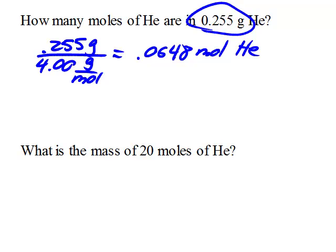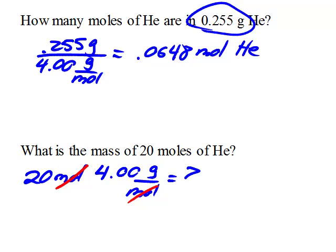Our third question is, what is the mass of 20 moles of helium? We have 20 moles. Each mole has a mass of 4 grams. The moles cancel, and we are left with 80 grams of helium.